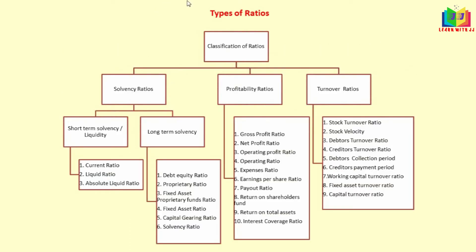Now we will see the classification of ratios. Ratios are classified into three: solvency ratio, profitability ratio, and turnover ratio. Solvency ratio is further classified into short-term solvency and long-term solvency. Short-term solvency is nothing but liquidity ratios — we have three: current ratio, liquid ratio, and absolute liquid ratio. In upcoming videos we will cover long-term solvency, profitability, and turnover ratios.